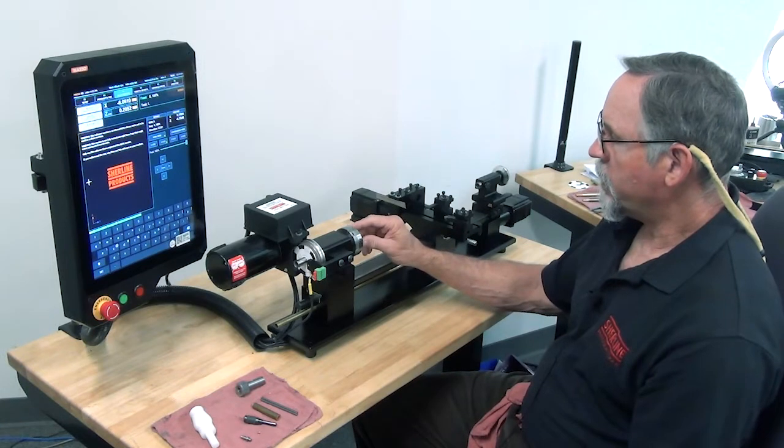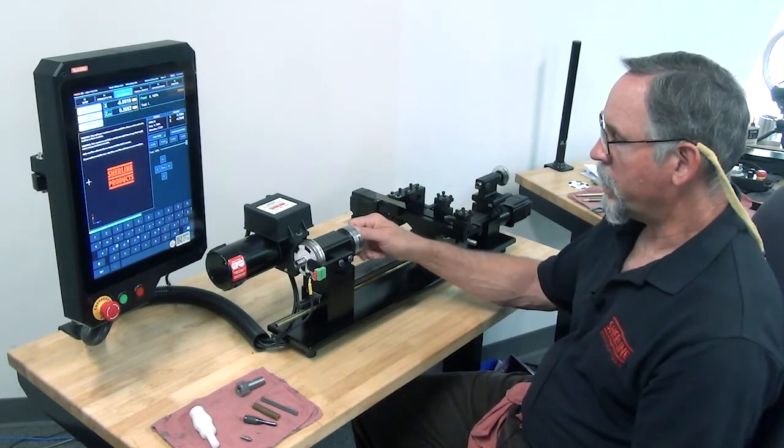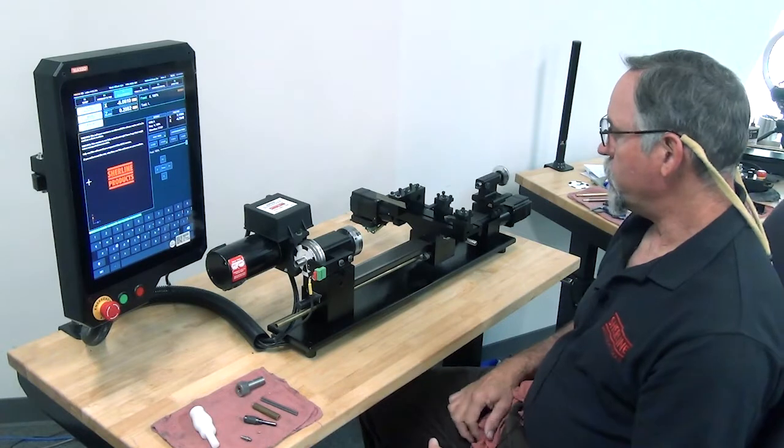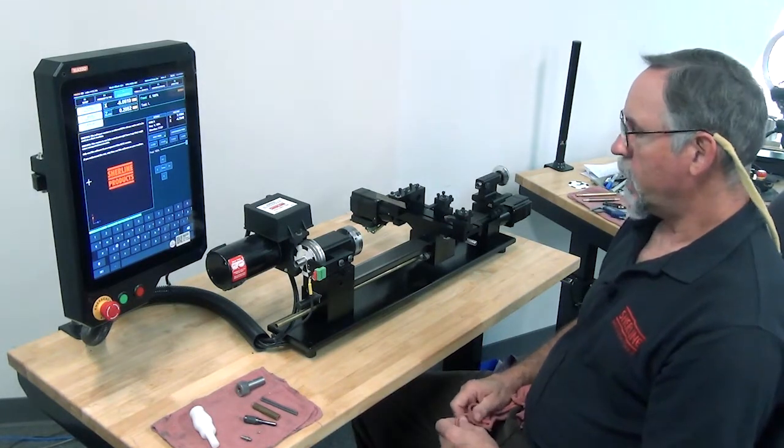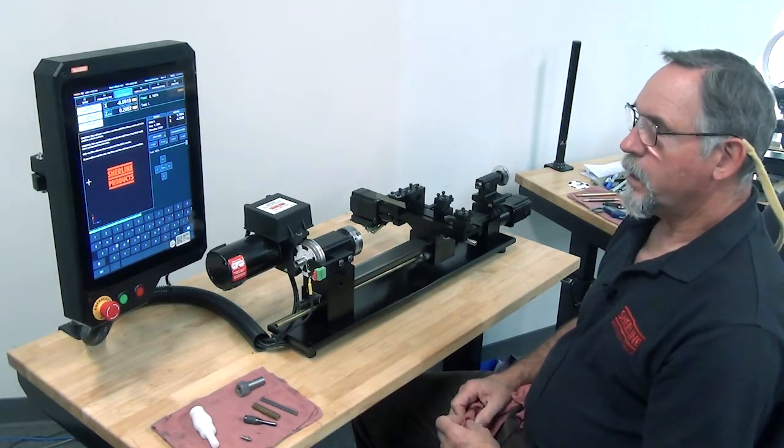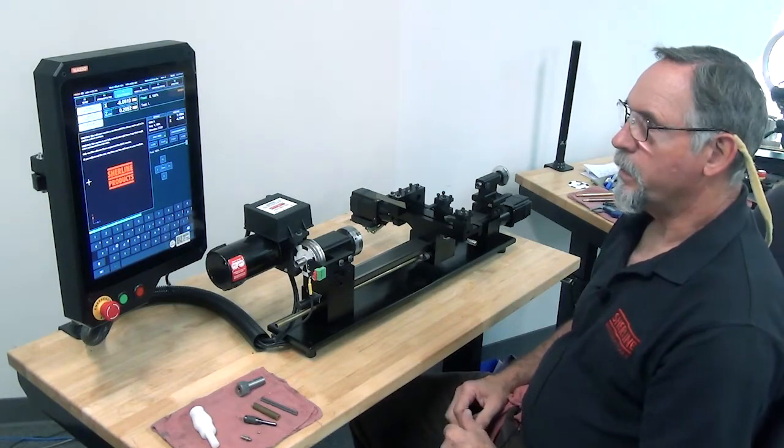We have our 2 1⁄2 inch 3 jaw chuck on the spindle. So what I'm going to do is step through touching off your tool, calling up programs, and some other things here.